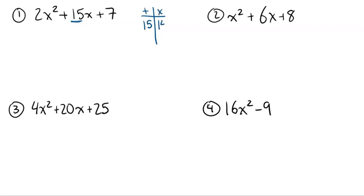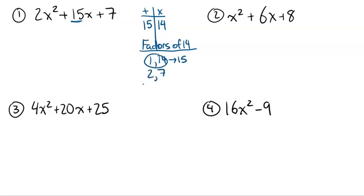So 2 times 7 here is 14. We're looking for factors of 14 that add to 15. Factors of 14: we have 1 and 14 — that adds to 15, so that's the right one. But you could also list 2 and 7, negative 1 and negative 14, and negative 2 and negative 7. Those would all multiply to 14, but they don't add to positive 15. So what we want is 1 and 14.